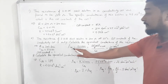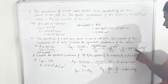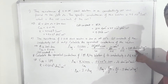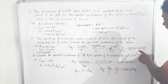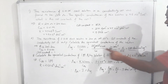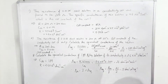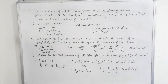The unit of equivalent conductance, as I mentioned in the last video, is Ω⁻¹ cm² eq⁻¹. So λeq = 500 Ω⁻¹ cm² eq⁻¹. You can repeat the video as per your convenience.